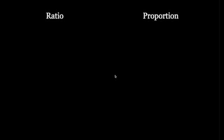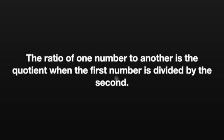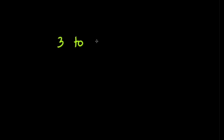The first thing we're going to do is define the words ratio and proportion. The ratio of one number to another is the quotient when the first number is divided by the second. The quotient is usually expressed in simplest form. Ratios can also be expressed in three different ways. For instance, you can write it out — so you can say 3, 2, 1.